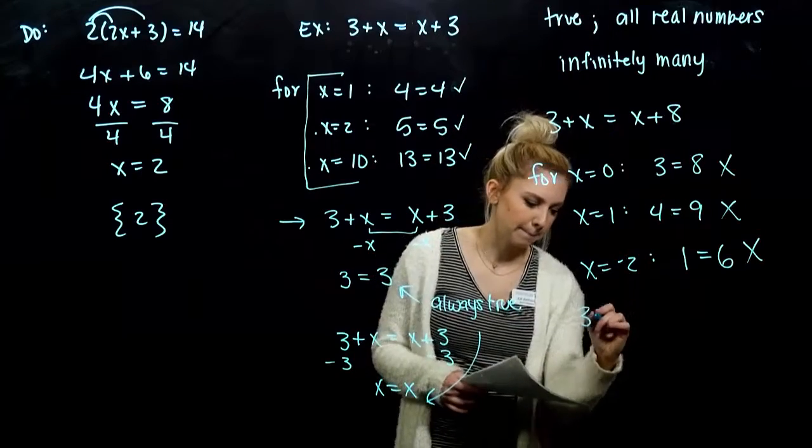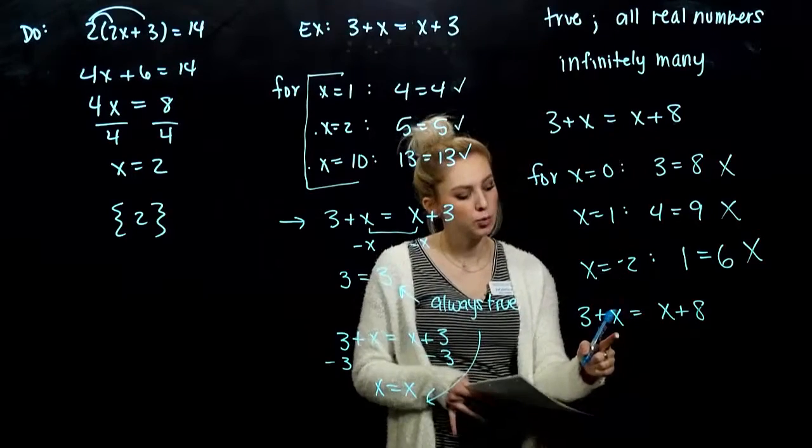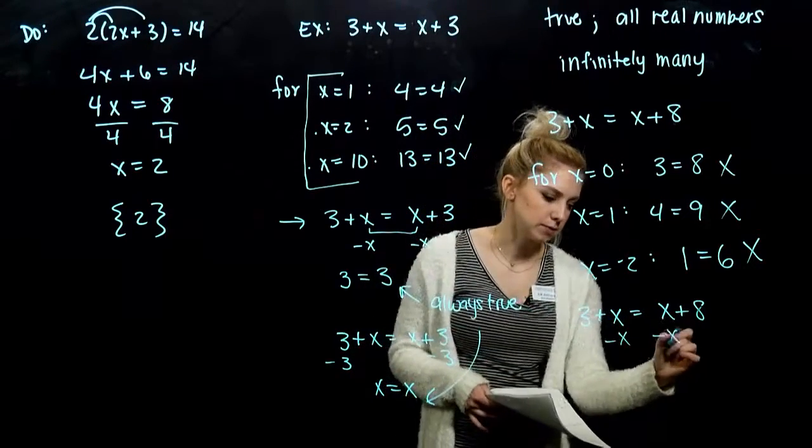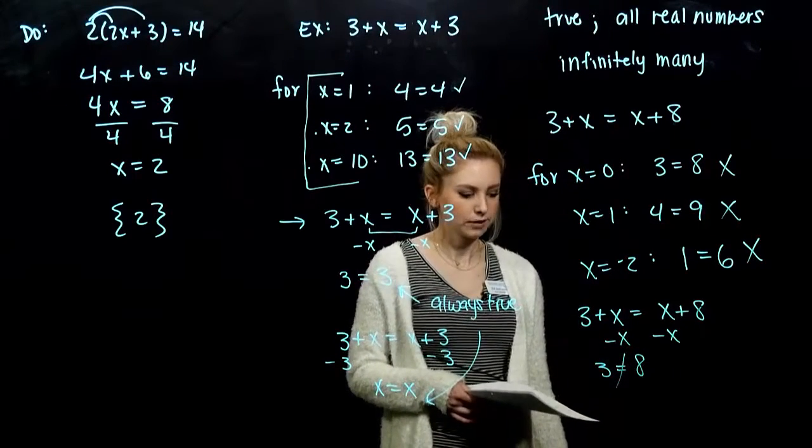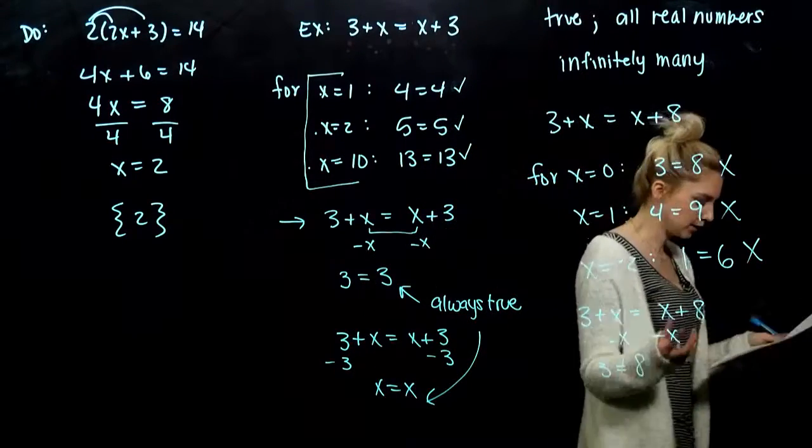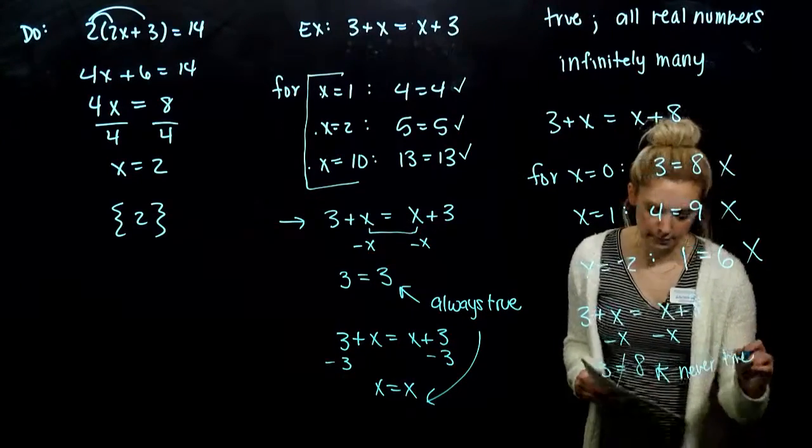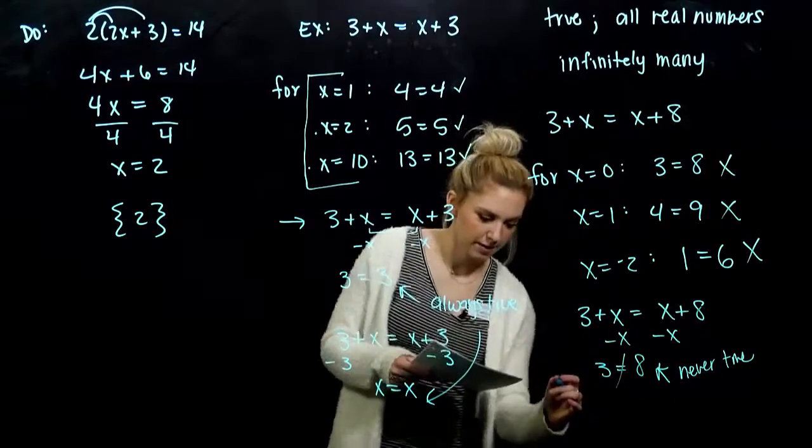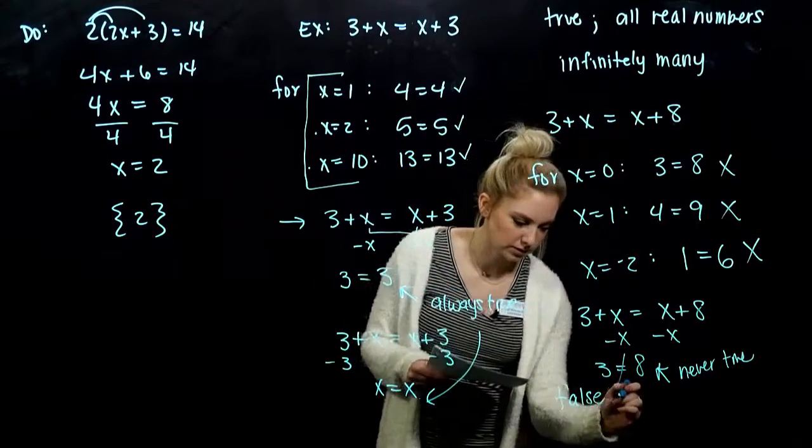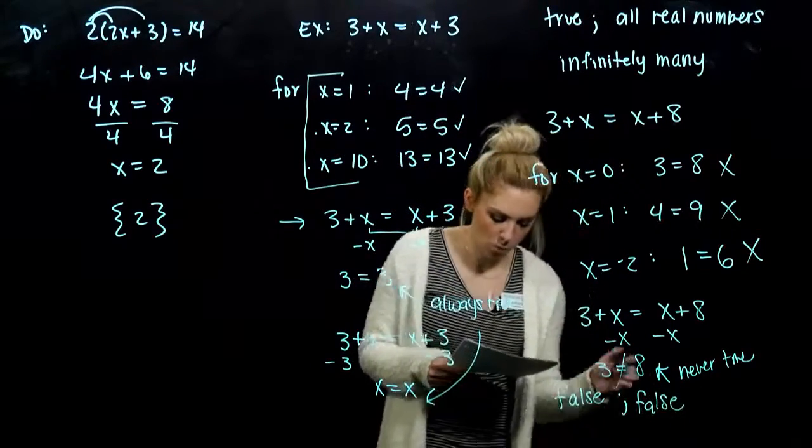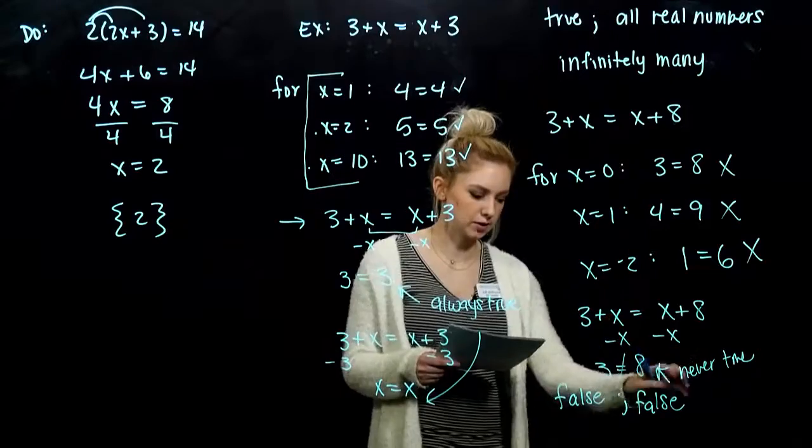Let's do just that. Taking my equation, let's say I am trying to remove x from this side to the other. Subtract x. Subtract x. 3 is equal to 8, never true. Not going to happen. We end with a false statement, something that is never true. So, the original equation is false for all real numbers. We don't have any solutions, any x values that will make this equation true.